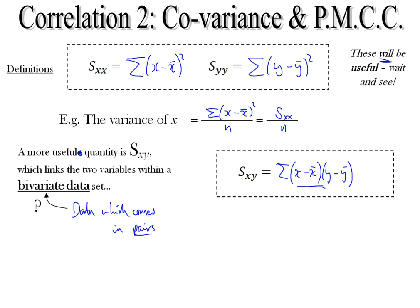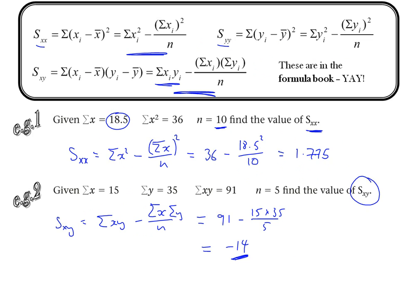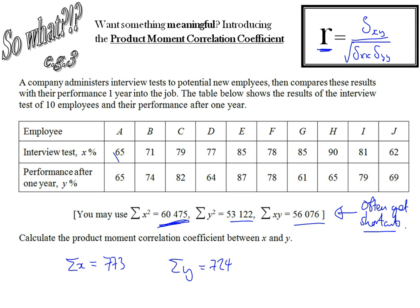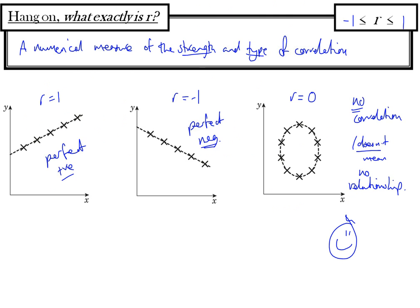Then the second sheet defines a whole bunch of stuff that you can calculate for sets of data. But it gives us this meaningful bit of information, R, the product moment correlation coefficient. And that gives us a number which describes the relationship between two sets of data.